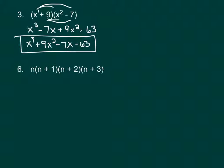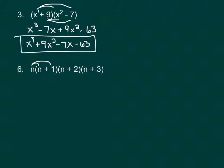We're going to skip numbers 4 and 5 — you'll do those tomorrow in class. Let's jump to number 6, where we're multiplying 4 separate terms: the product of 4 individual terms. Pick 2 and go in order. This first one is a monomial (1 term) and this is a binomial (2 terms). Multiply n times n plus 1 by distributing the n: n times n is n squared, and n times 1 is just n.